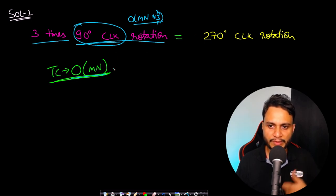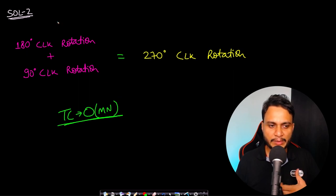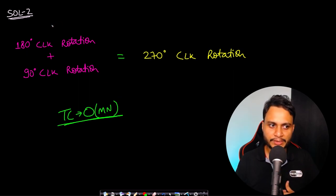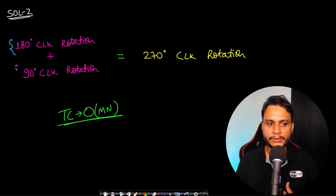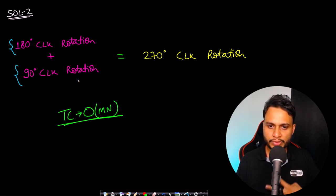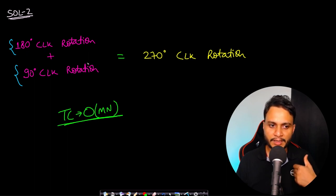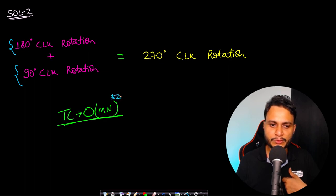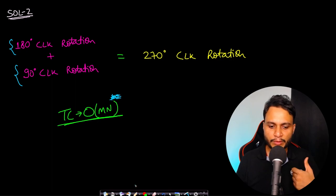Solution number two can be a combination of 180 degrees and 90 degrees rotation — you first do a 180 degrees clockwise rotation followed by a 90 degrees clockwise rotation. This is a two-step process instead of the previous three-step process. Again, the time complexity will be O(mn) because multiplying by 2, a constant, gets dropped off.